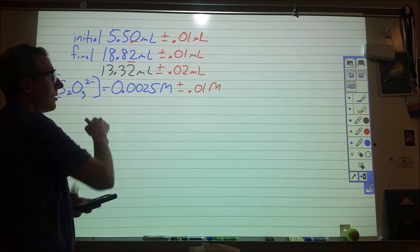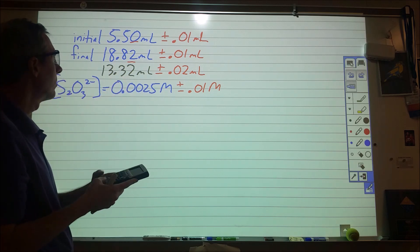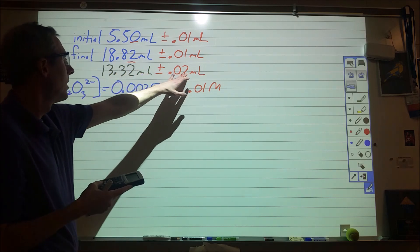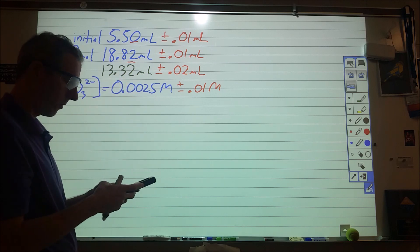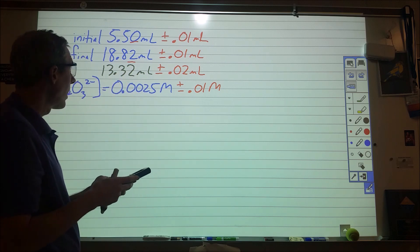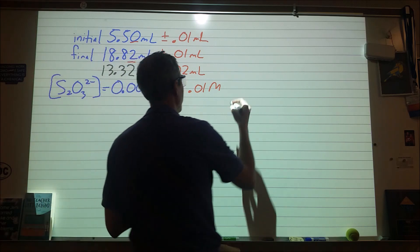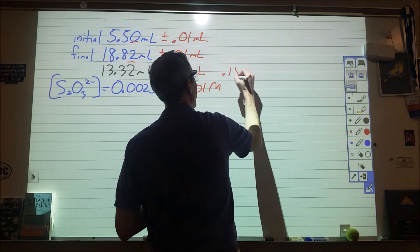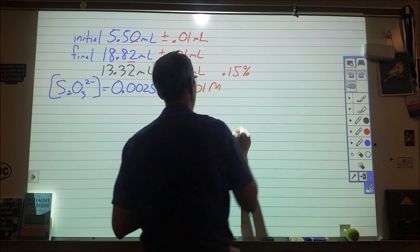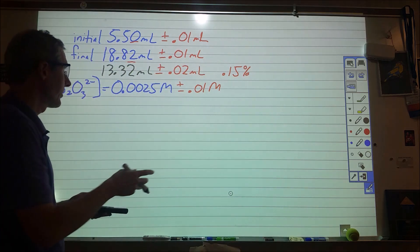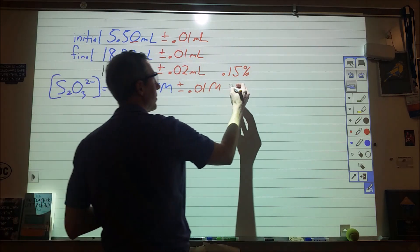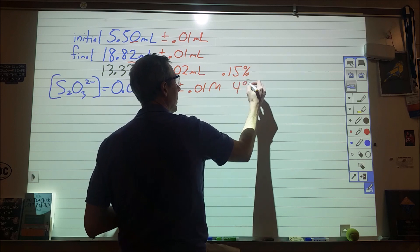To do the next part, we're going to turn this into moles. First we're going to figure out what percent 0.02 is of 13.32. So we're going to take 0.02, divide by 13.32, multiply by 100, and this comes out to be 0.15 percent. Then we're going to do the same thing with this, and 0.01 divided by 0.0025 ends up being 4 percent.